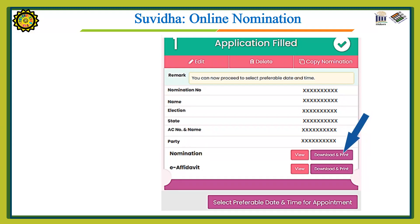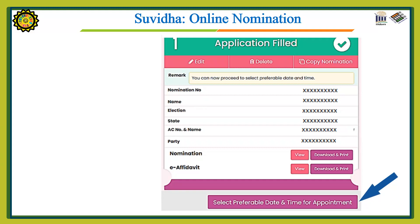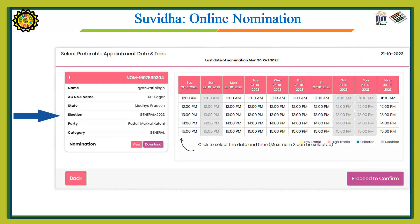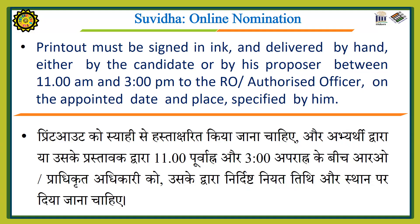Now we will download the nomination form and take a printout. We will also download the e-affidavit and take its printout. Since we have to submit the printout to the RO, select your preferred date and time for the appointment, then click 'Proceed to Confirm.' Remember: the printout must be signed in ink and delivered by hand, either by the candidate or by his proposer, between 11 am and 3 pm to the RO or authorized officer on the appointed date and place specified by them.